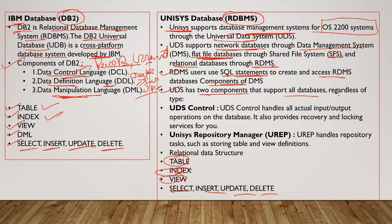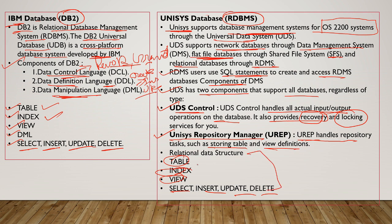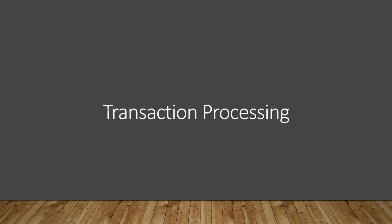RDMS users use SQL commands to create and access the RDMS database. RDMS has two components: UDS Control, which handles all actual input/output operations on the database and provides recovery and locking services; and the Unisys Repository Manager (UREP), which handles repository tasks such as storing table and view definitions. All other queries like SELECT and index queries can also be written in RDMS.